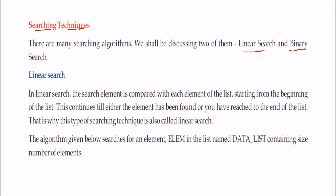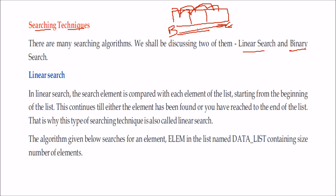Linear search means sequential search. Each element in the list is compared — all the elements are compared from the beginning to the end, till the element is found or the search reaches the end.